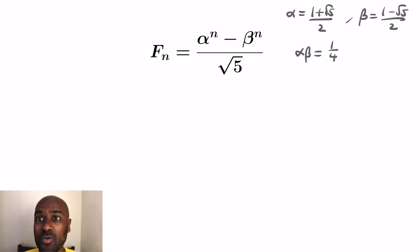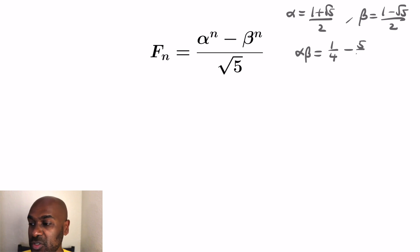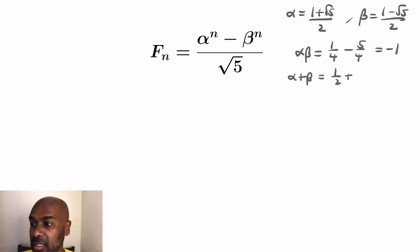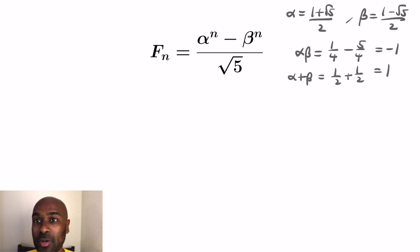Some things that are going to be useful in order to use this formula: alpha times beta equals negative 1, and alpha plus beta equals 1. You can compute those explicitly using what alpha and beta are.